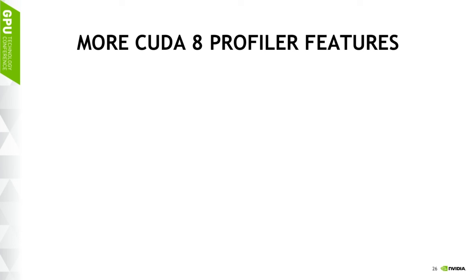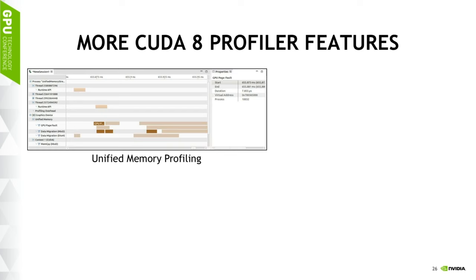One important profiler feature is the ability to profile unified memory. Unified memory profiling allows you to visualize page faults and page migrations on the timeline. You'll be able to introspect those page faults to find where in your program is causing them. That can help you focus your optimizations and decide when to use those tuning APIs I mentioned.